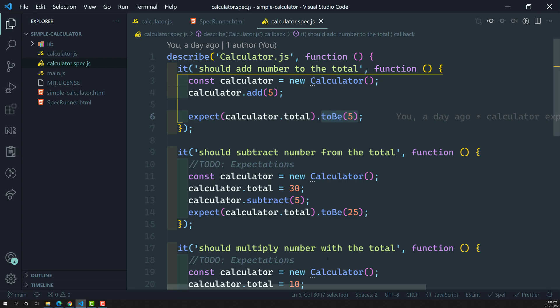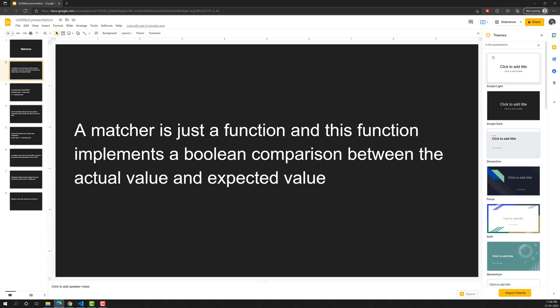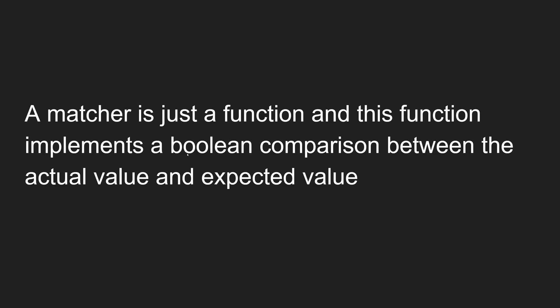So why do we need to use matchers in Jasmine? If I open the documentation, a matcher is nothing but just a function. If you look at `.toBe`, it is just a function that takes some value, and this function implements a boolean comparison between the actual value and the expected value.